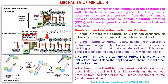Penicillin inhibits the activity of PBPs, which prevents the PBPs from cross-linking the peptidoglycan chains — an essential step in cell wall synthesis. The bacterial cell wall becomes weakened, and without proper cross-linking, the cell wall is unable to withstand the osmotic pressure from inside the cell.